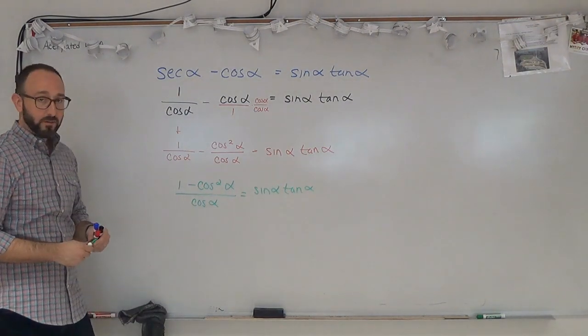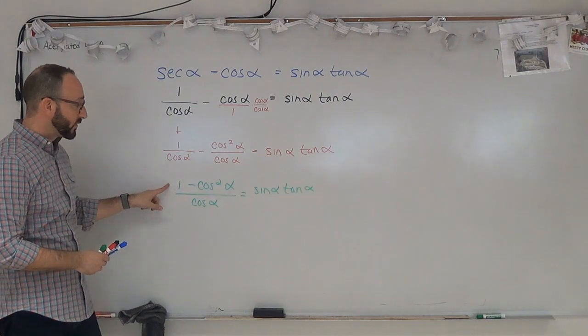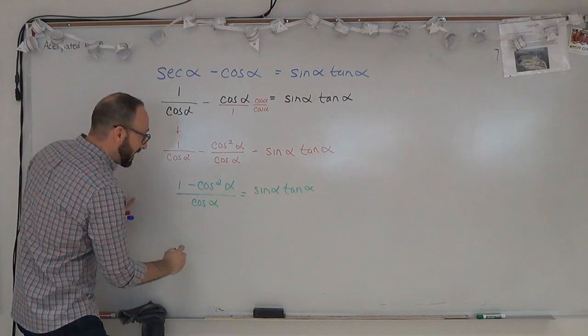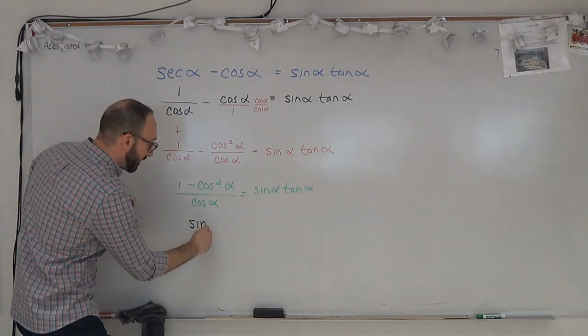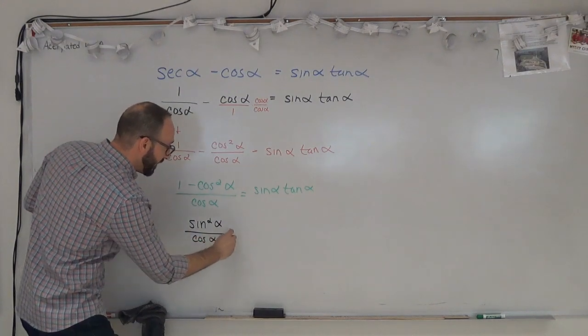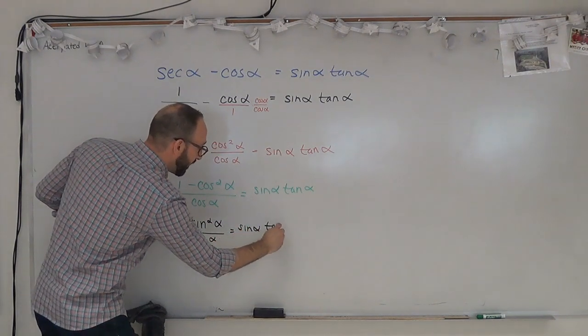Now, if you remember from your Pythagorean identities, 1 minus cosine squared alpha is sin squared alpha. So I'm going to replace 1 minus cosine squared alpha with sin squared alpha over cosine alpha, and that's going to equal sin alpha tan alpha.